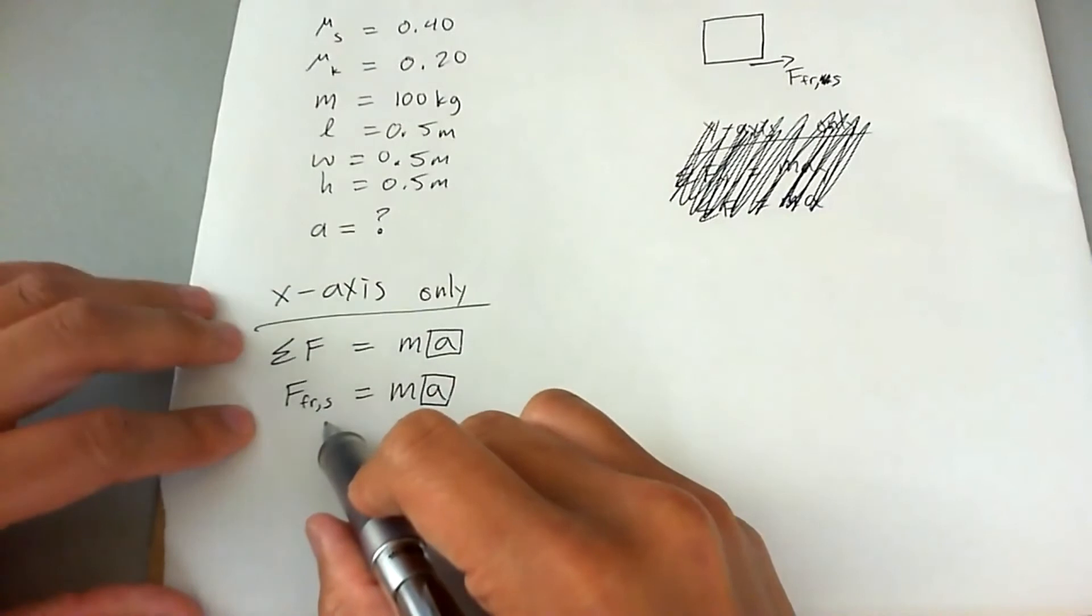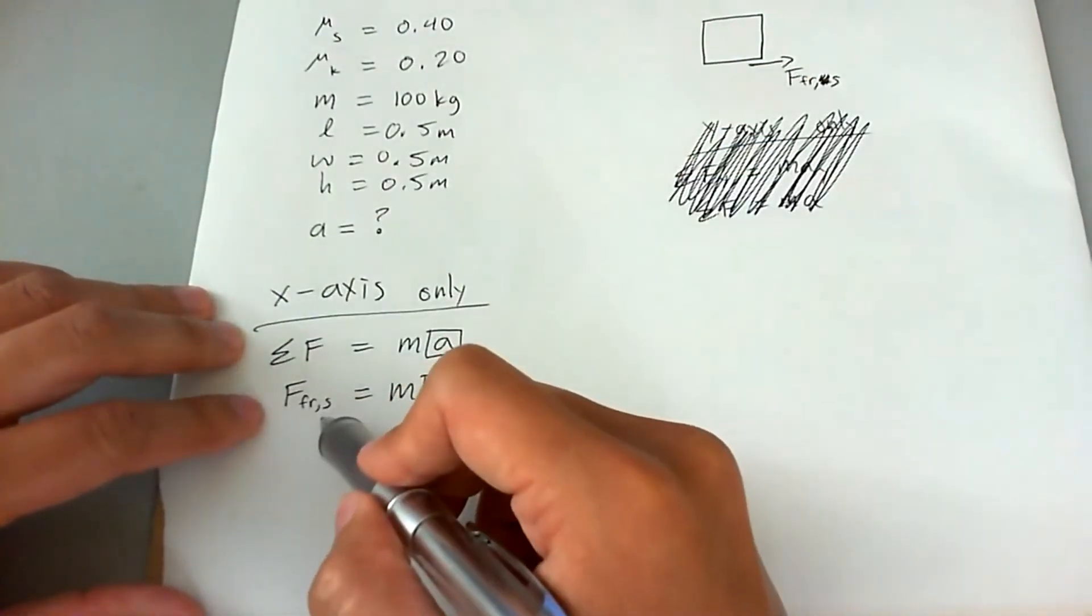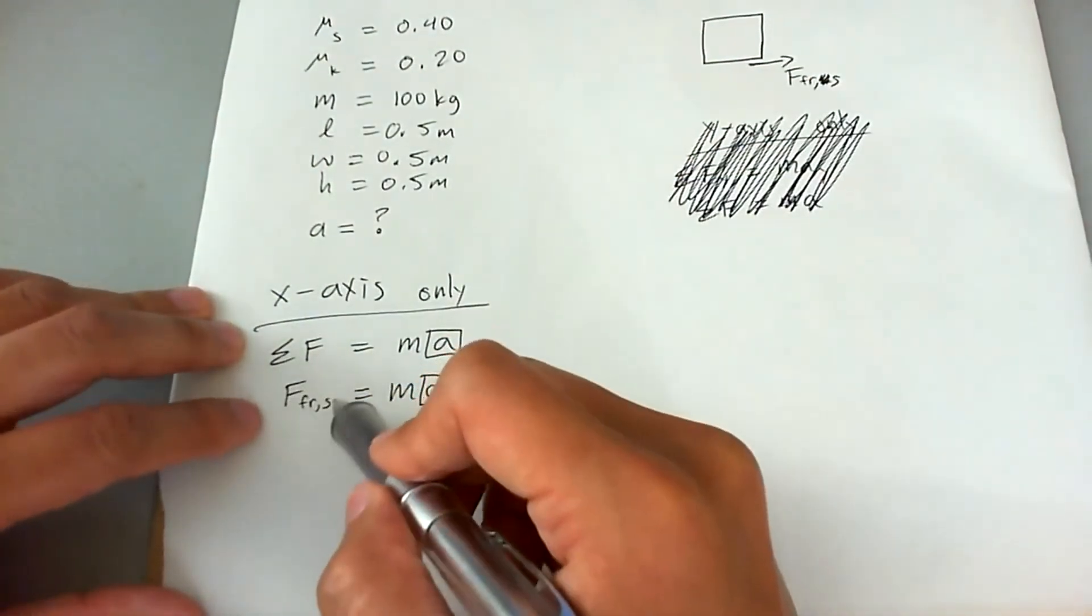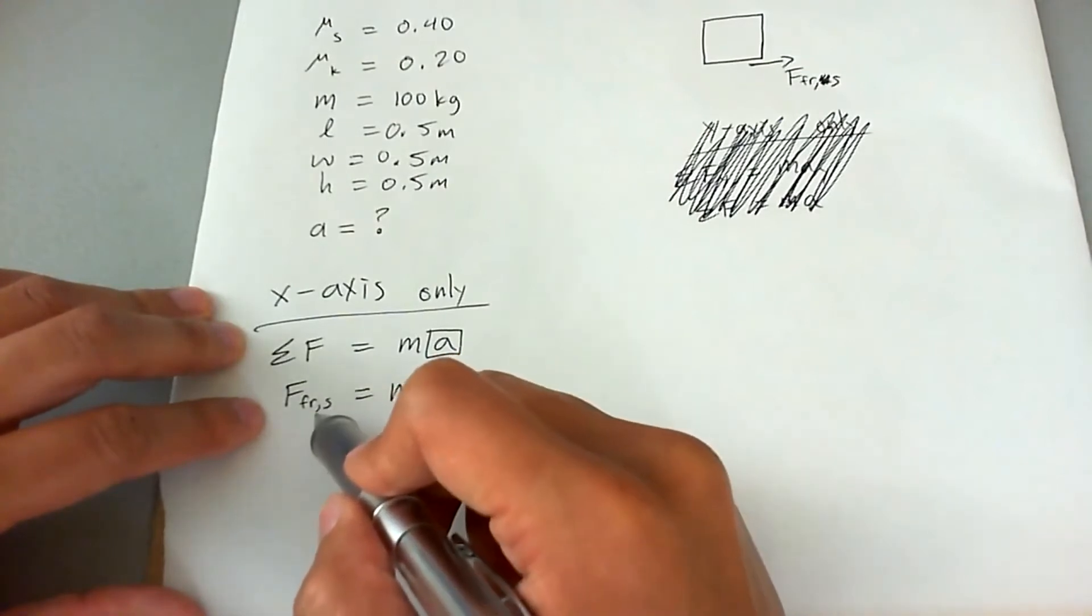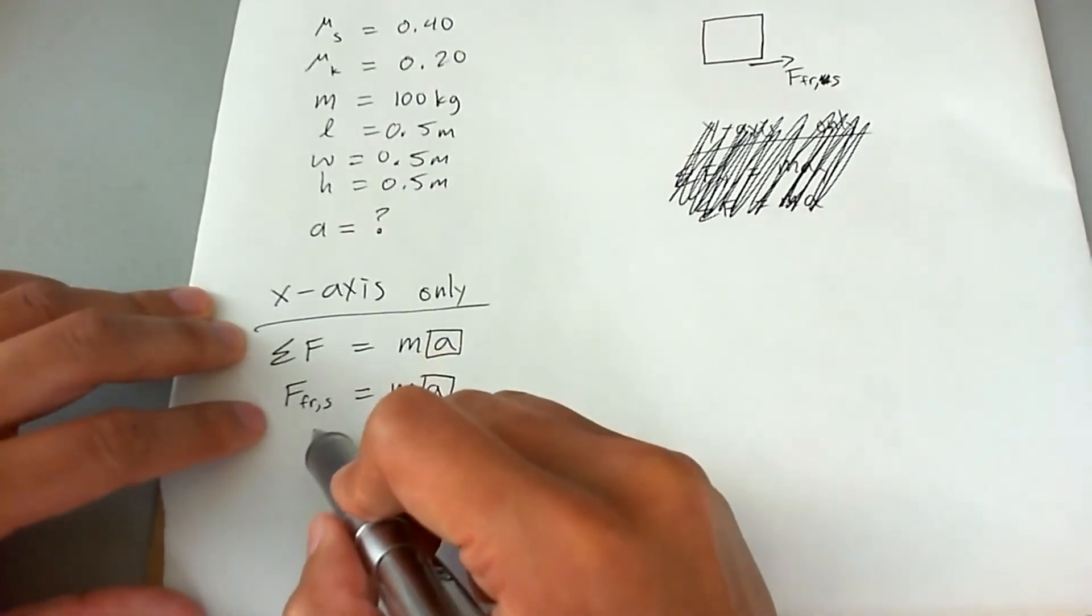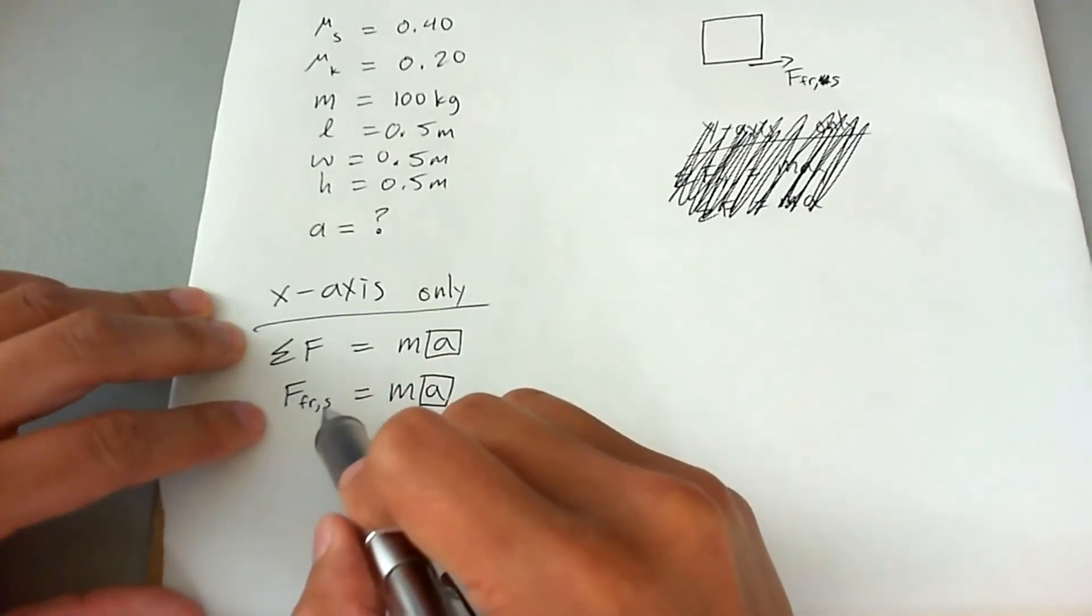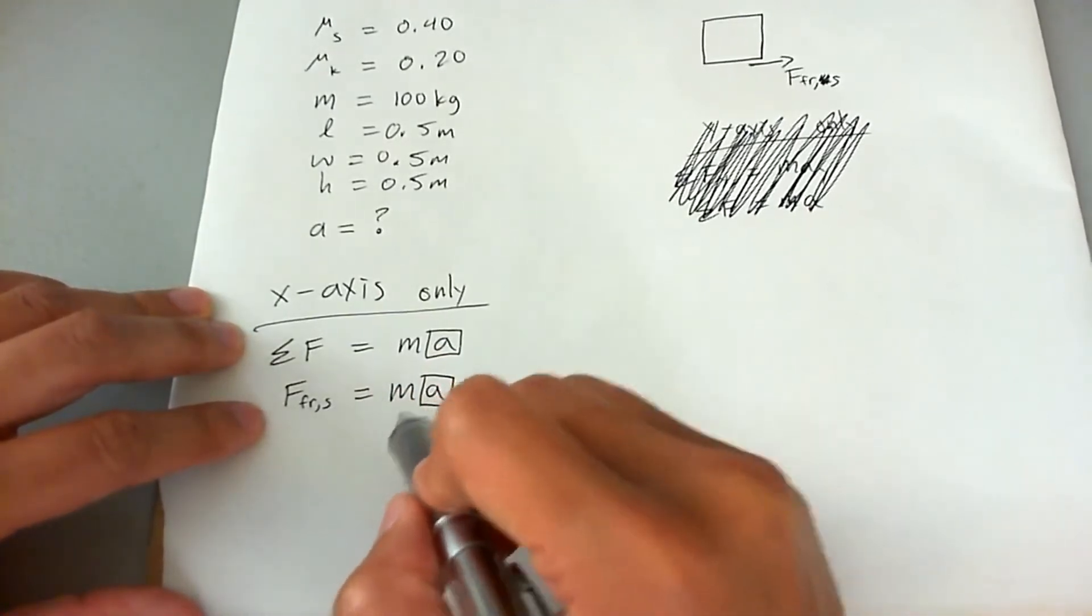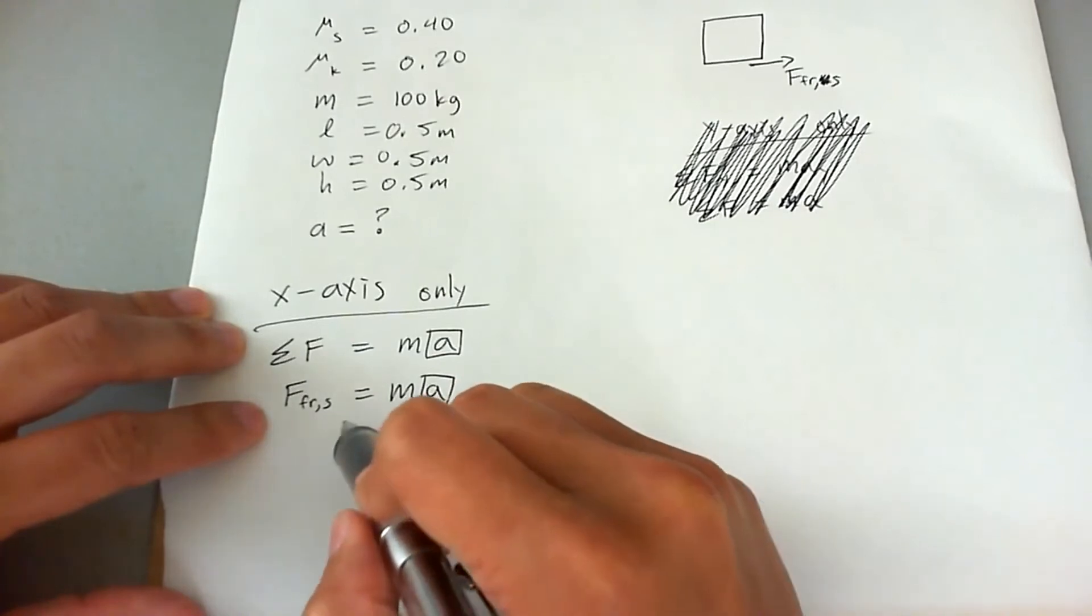Once the box slips, then we're going to go into kinetic friction. So this static friction force, which I'm going to then write out an equation for, is only for the maximum static friction that something can handle before it goes into a kinetic friction mode.